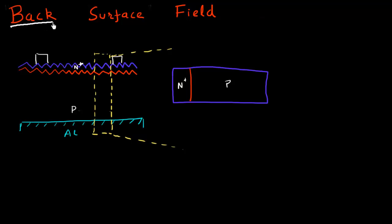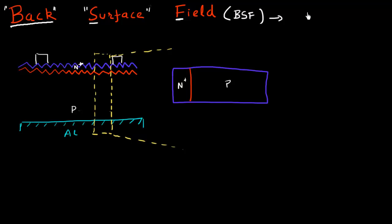In this video, I want to introduce the concept of back surface field, which is many times also abbreviated as BSF. And how this BSF can essentially reduce the surface recombination at the back surface of the solar cell. So we want to understand what this BSF is and how it does reduce the surface recombination at the back surface.